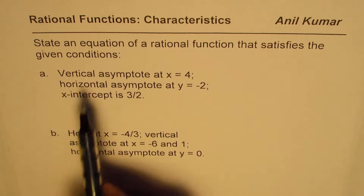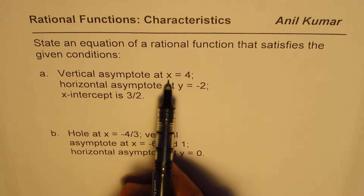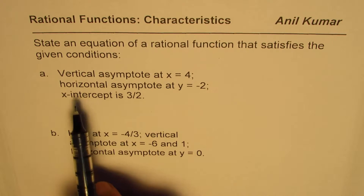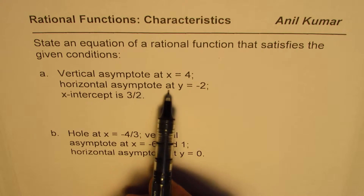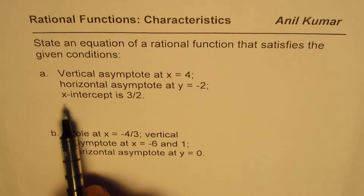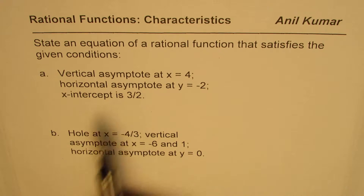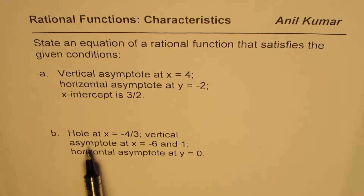The first one is: vertical asymptote at x equals 4, horizontal asymptote at y equals minus 2, and x-intercept is 3 over 2.